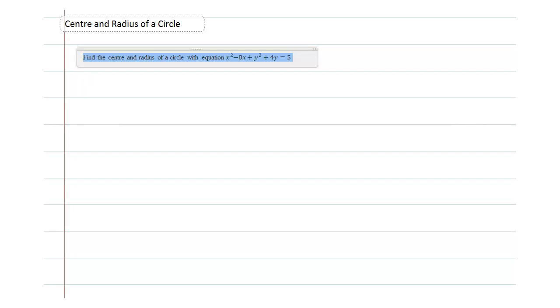Now this is the question. Find the center and radius of a circle with this equation. Let me just write this equation out: x² - 8x + y² + 4y = 5.